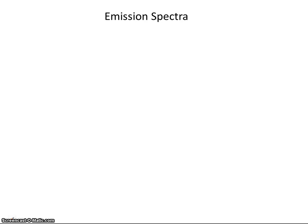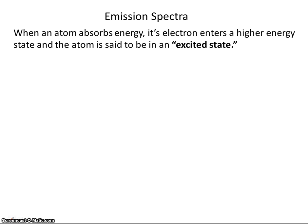In the next three videos, we're going to take a look at emission spectra. An emission spectrum is simply when an atom emits energy in the form of light. We have two definitions we're going to look at: an atom that's in the excited state and an atom that's in the ground state. We're going to use a couple of illustrations to help us along the way.